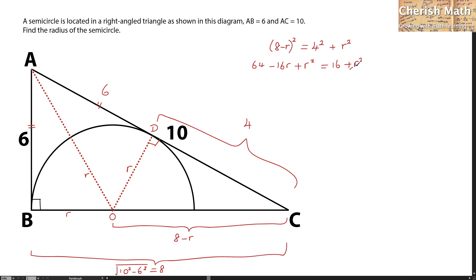R squared cancels out. The value of R is 64 minus 16 divided by 16, and the answer for the radius is 3 units. That's it.